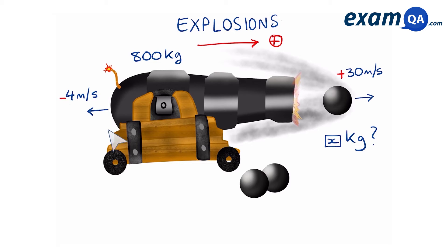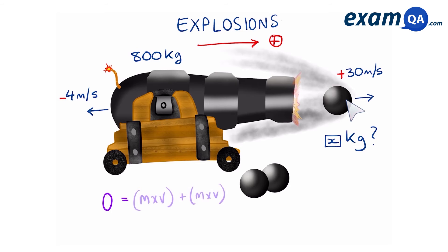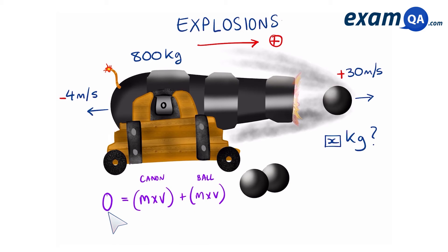In the explosion, the total momentum before was zero and therefore the total momentum after is also going to be zero. However, we know that there are two things moving: one is the ball moving forward and the second one is the cannon moving backwards. They do have momentum — it just means that they have to add up to zero. Now we have our equation; all we have to do is use the information from the question to figure out what the mass of the ball is.